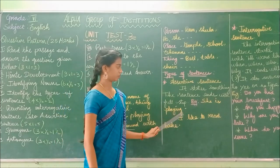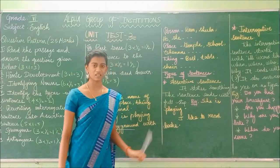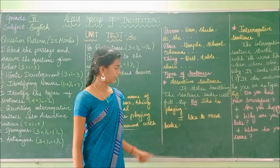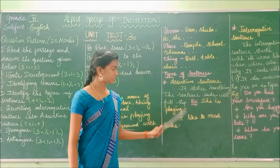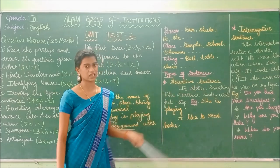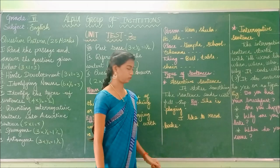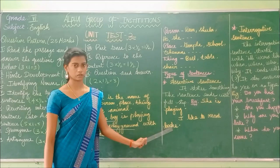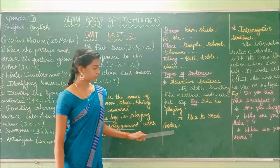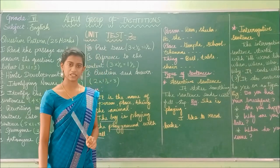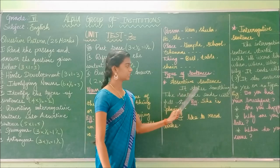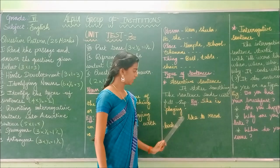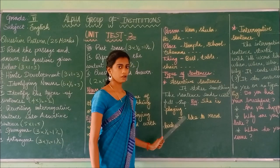An assertive sentence states something about somebody or something, and the sentence always ends with a full stop. Example: 'She is playing.' — something is being stated and the sentence ends with a full stop. Another example: 'I like to read books.' — again, something is stated and it ends with a full stop. Both sentences are assertive sentences.